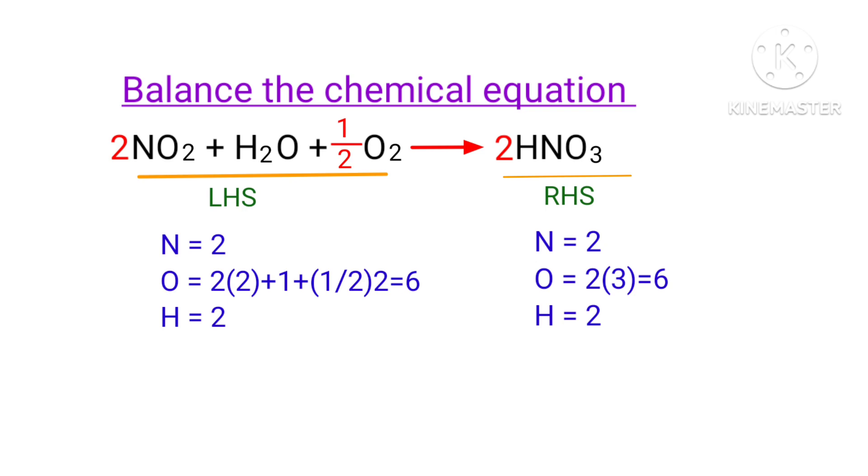In this equation, 1 by 2 is a rational number. We don't use rational numbers for a chemical equation. So to get whole numbers, we need to multiply this equation by a coefficient of 2.